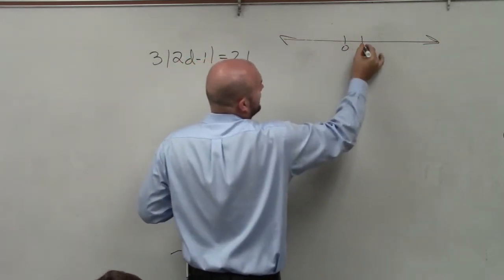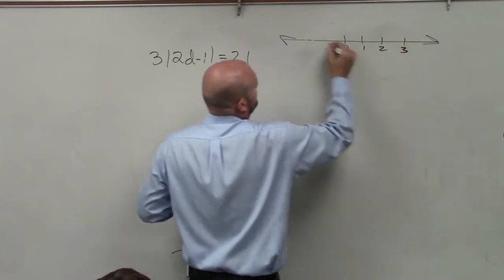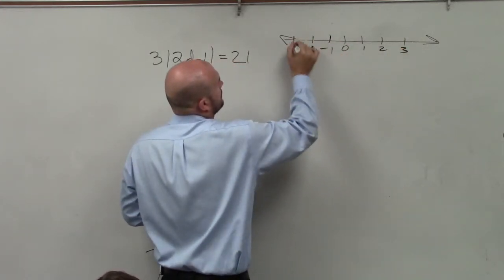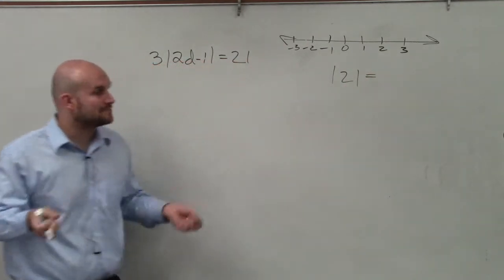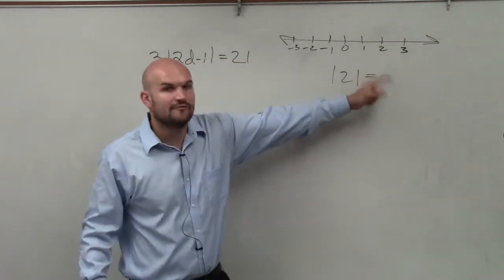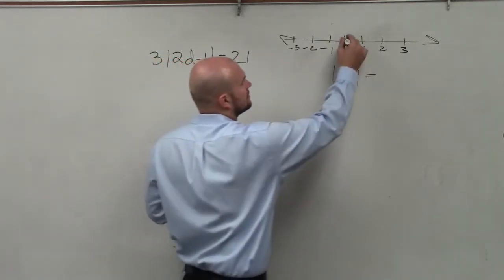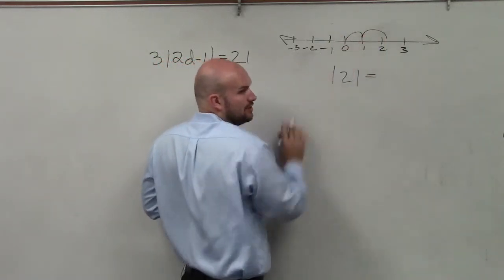Going back to our number line, if I was looking at two values, let's say the absolute value of 2. Absolute value is saying, what is the absolute distance of 2 from 0? Well, you can see that's 2 units over.